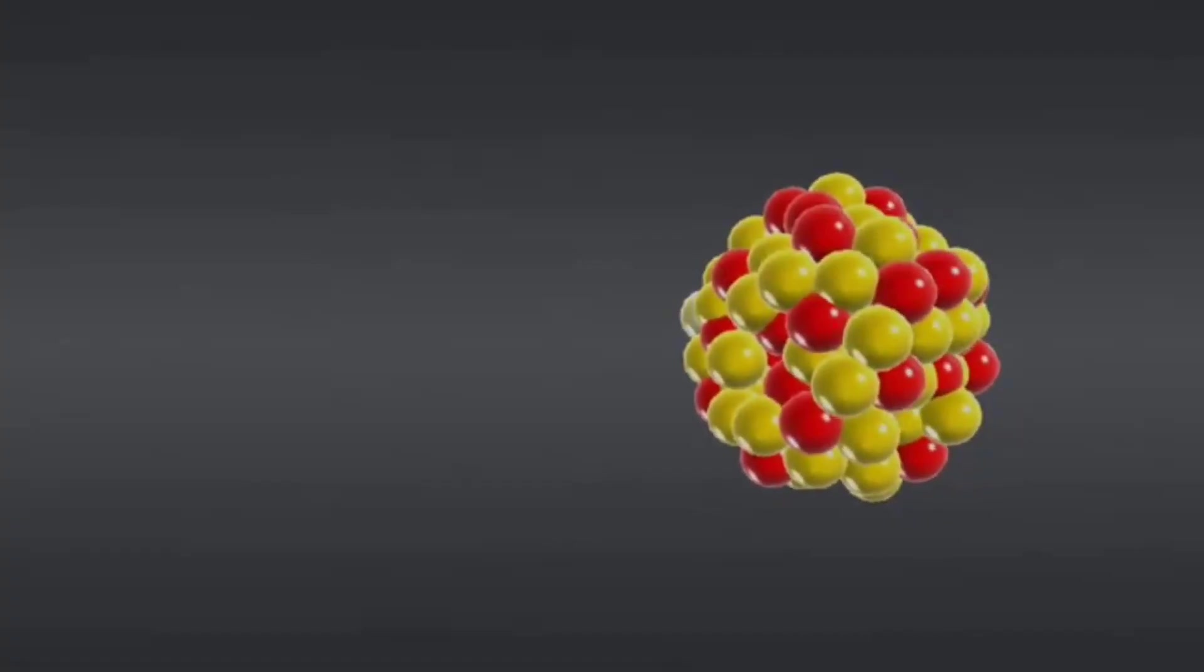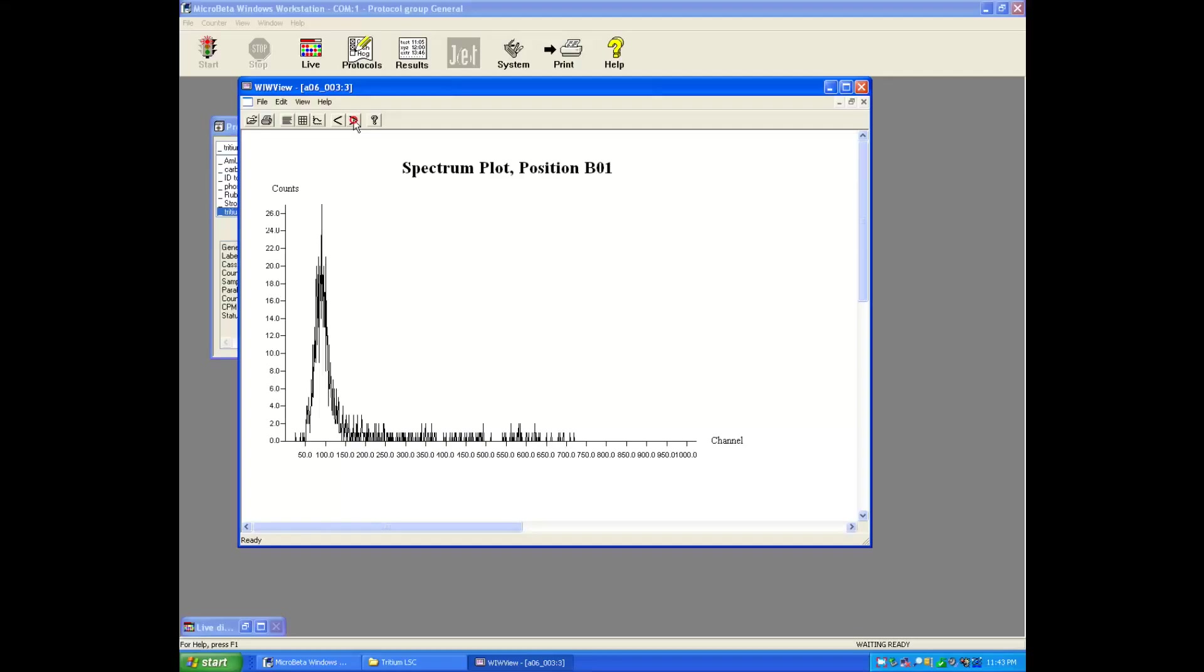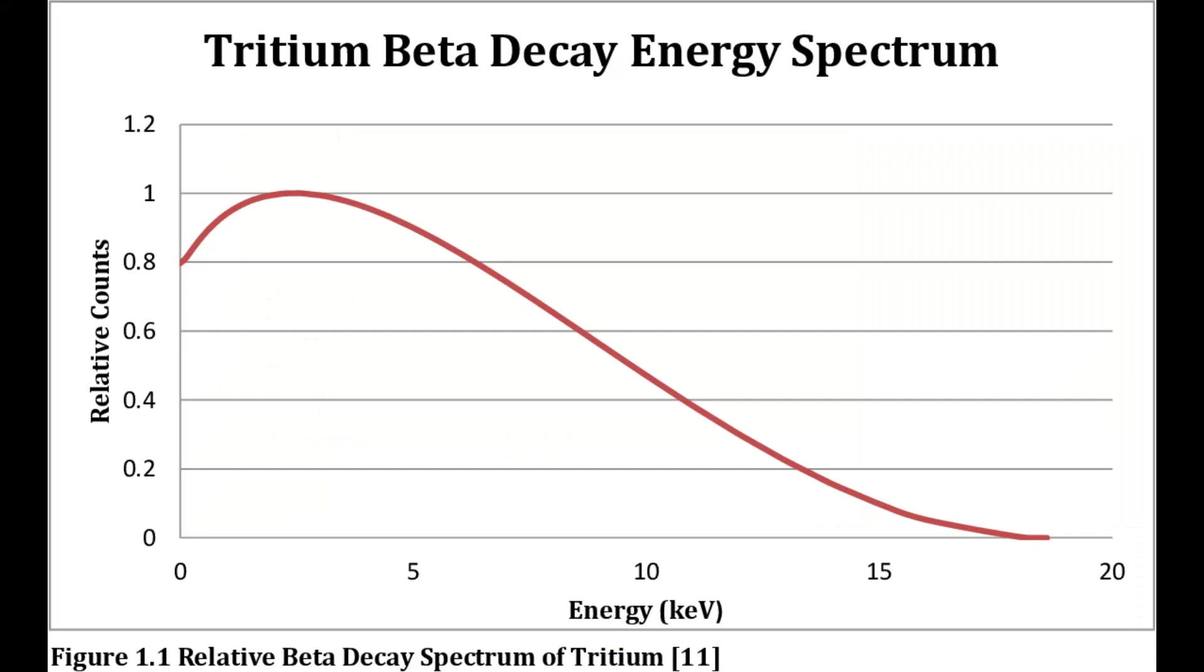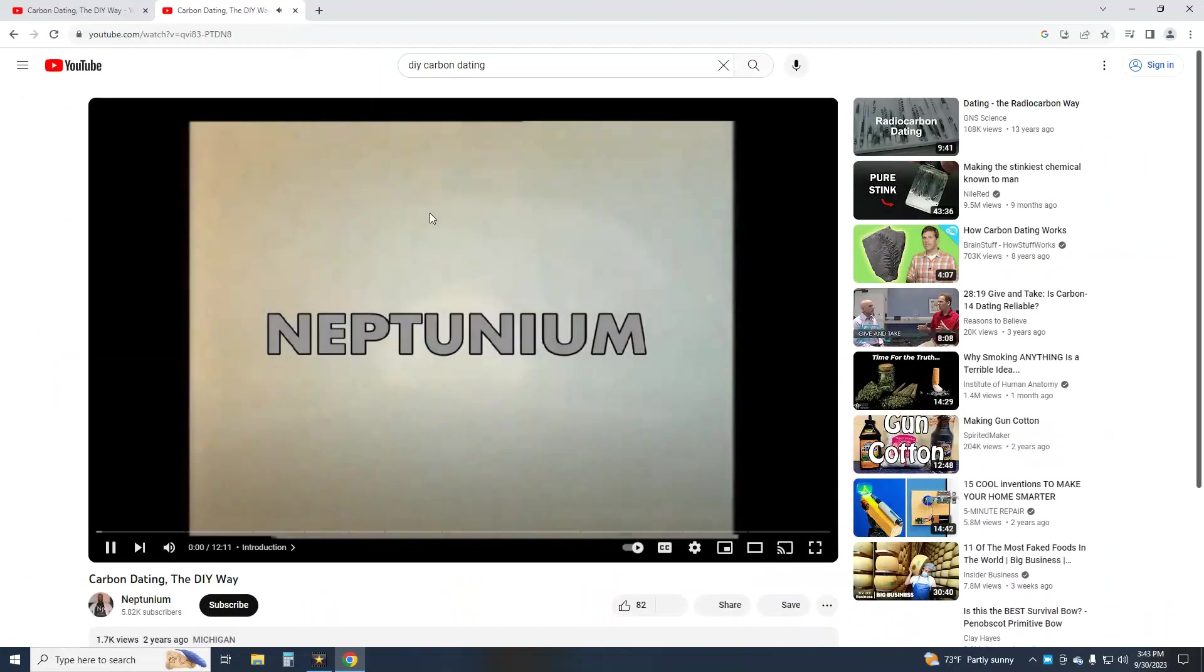Tritium radioactive decay consists of the ejection of an electron with a weak average energy of 5 keV and a maximum of about 18. This is too weak to penetrate more than a few millimeters of air and is difficult to detect. The rest of the energy is carried by the anti-neutrino. I explain this process in the carbon dating video, link in the description.